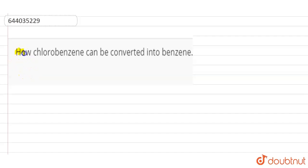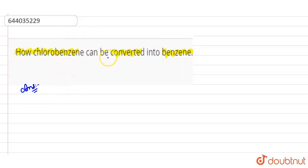Hello students. The question we have here is: how can chlorobenzene be converted into benzene? So if we see the reaction for this conversion, we have chlorobenzene — the benzene ring with a chlorine atom attached.